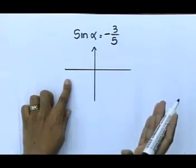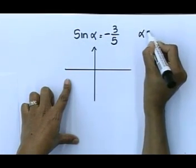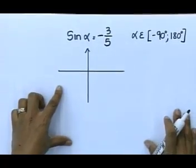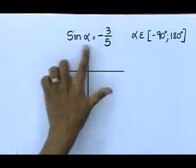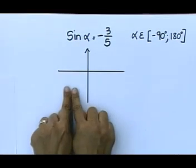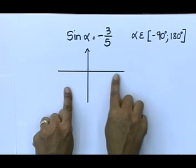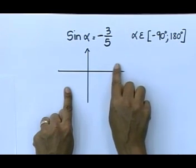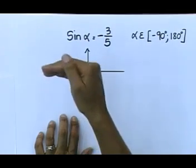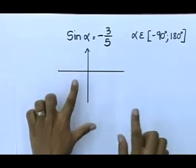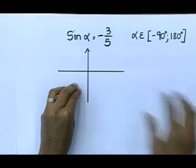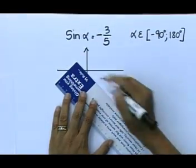How do you know where to sketch? They said alpha is an element from negative 90 to 180 degrees. Sin is negative in the third or fourth quadrant. The angle goes from 0 to negative 90 in the fourth quadrant, 0 to 90 in the first, 90 to 180 in the second. You cannot go to the third quadrant because you stop at 180. So your sketch is going to be in the fourth quadrant.